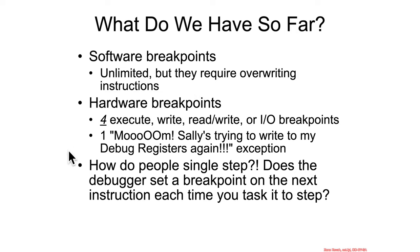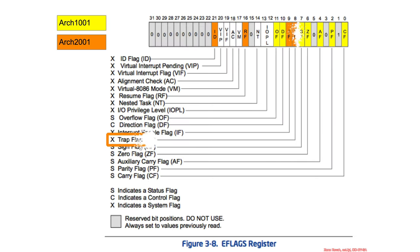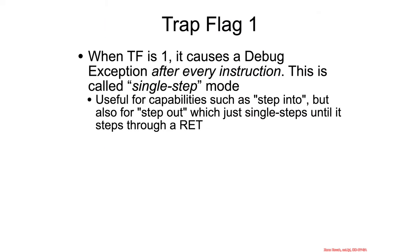So how do they do it? They typically use what's called the trap flag — another special magic flag in the RFlags register. The presence of the trap flag being set to one in the RFlags register means that every single instruction that runs is going to cause a debug exception afterwards. We refer to this as single-step mode.